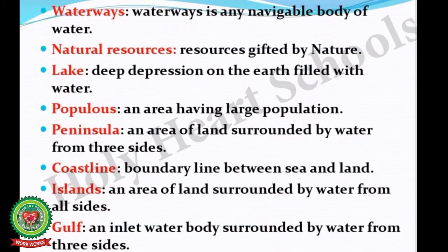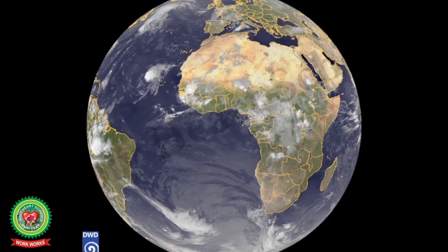A watershed is an area of land that separates water flowing to different river basins or seas. Waterways refers to any navigable body of water. Natural resources are resources gifted by nature. A lake is a deep depression on the earth filled with water. A populous area is one having a large population. A peninsula is an area of land surrounded by water from three sides. Coastline is the boundary line between sea and land. An island is an area of land surrounded by water from all sides. A gulf is a water body surrounded by land from three sides.